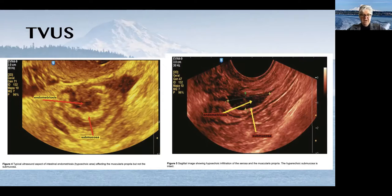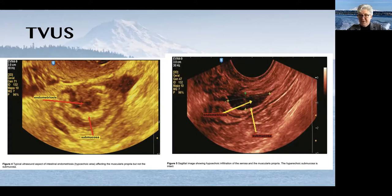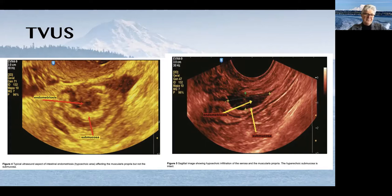Here are some pictures of endometriosis on the bowel wall. The most important thing to understanding what is truly on the bowel wall versus on the posterior cervix or vagina is to be able to see a normal thin bowel wall coming into it and leaving it. When I was a little kid, my neighbors had a boa constrictor — I always think of a snake that ate a chicken on transverse view. You can see this large nodule of endometriosis within the muscularis, and then you can see the submucosa indented into the bowel wall.